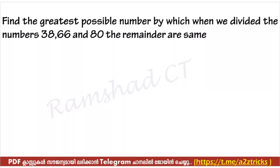The remainder is the same — that's why we have to ask how many more people are involved. One is the greatest, one is the least. What is the greatest? That is the HCF. What is the least? That is the LCM.